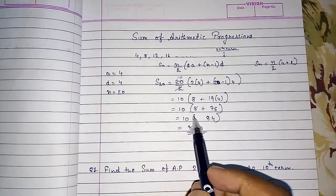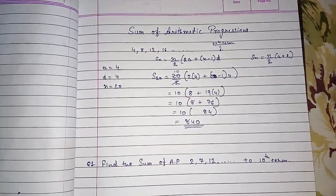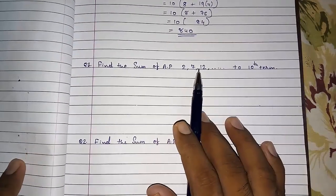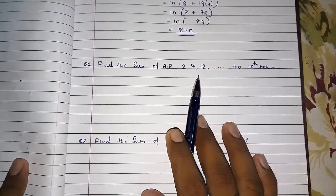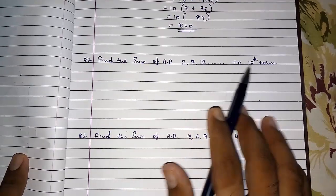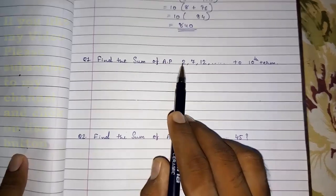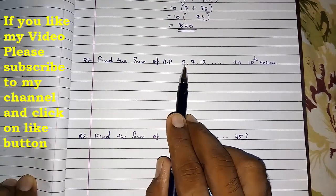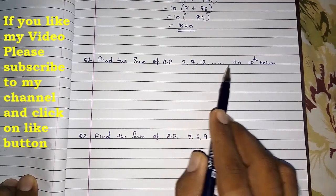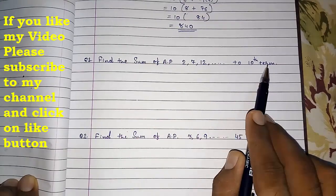Actually, understanding this concept is simple, but implementing it in problems can be a little bit difficult. So I am going to solve two more sums so that you know what to do. In this sum, the AP is 2, 7, 12, ... and we have to find the sum up to the 10th term.